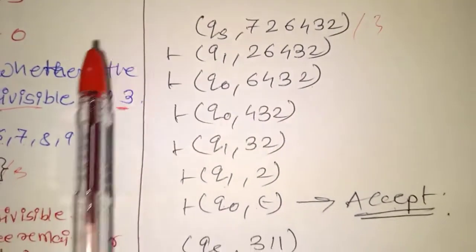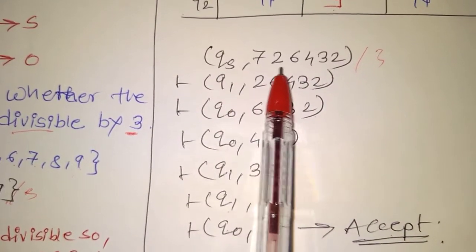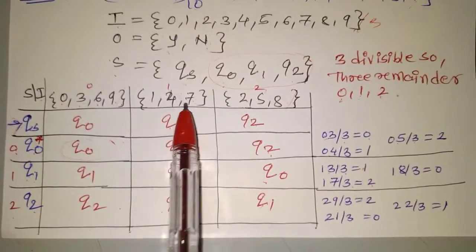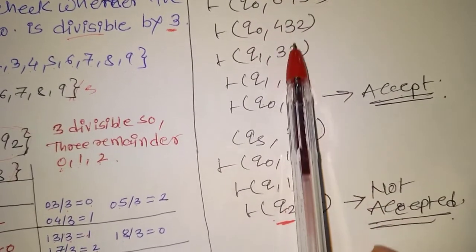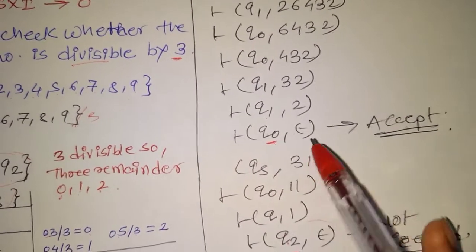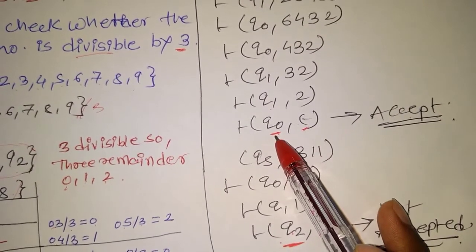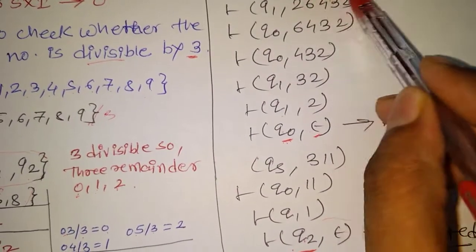This is the example of an accepted number — divisible by 3. Qs is the start state and the example number is 726. Qs on input 7 goes to Q1. Q1 on input 2 goes to Q0. Q0 on input 6 goes to Q0. At the end of the input, the empty string epsilon is consumed, and Q0 is the final state. That's why this number 726 is accepted and is divisible by 3.